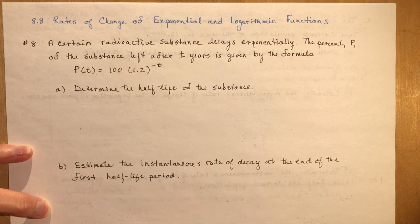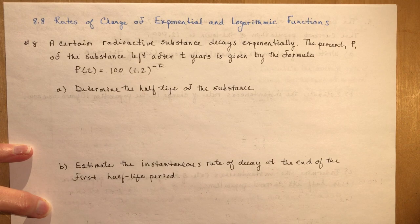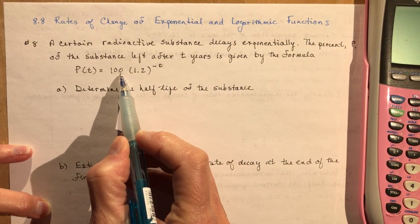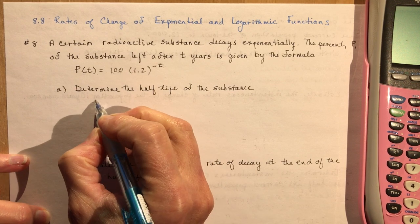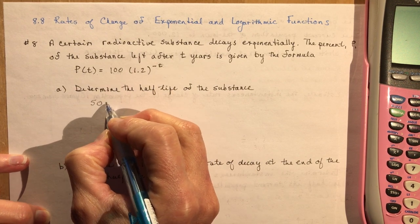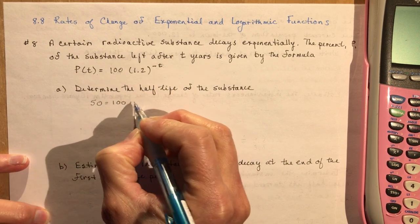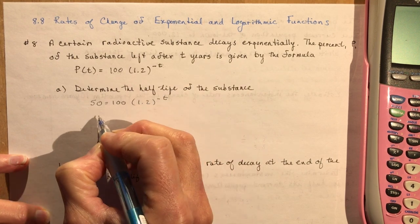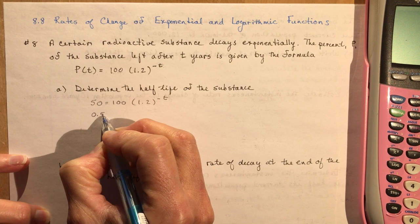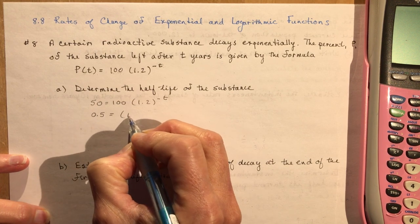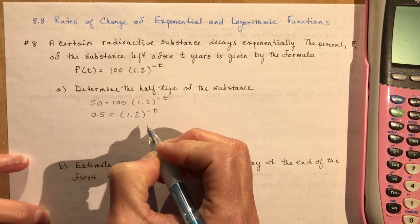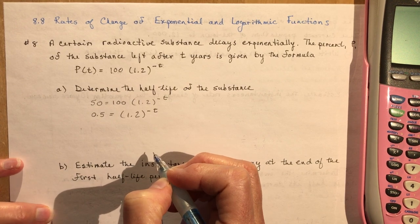Determine the half-life of the substance. So if the substance starts with 100%, the half-life is going to happen when there's 50% of it left. By setting the equation equal to 50 and dividing by 100, that gives you one half on this side, equal to 1.2 to the minus T. So now you're going to use your logarithm rules.